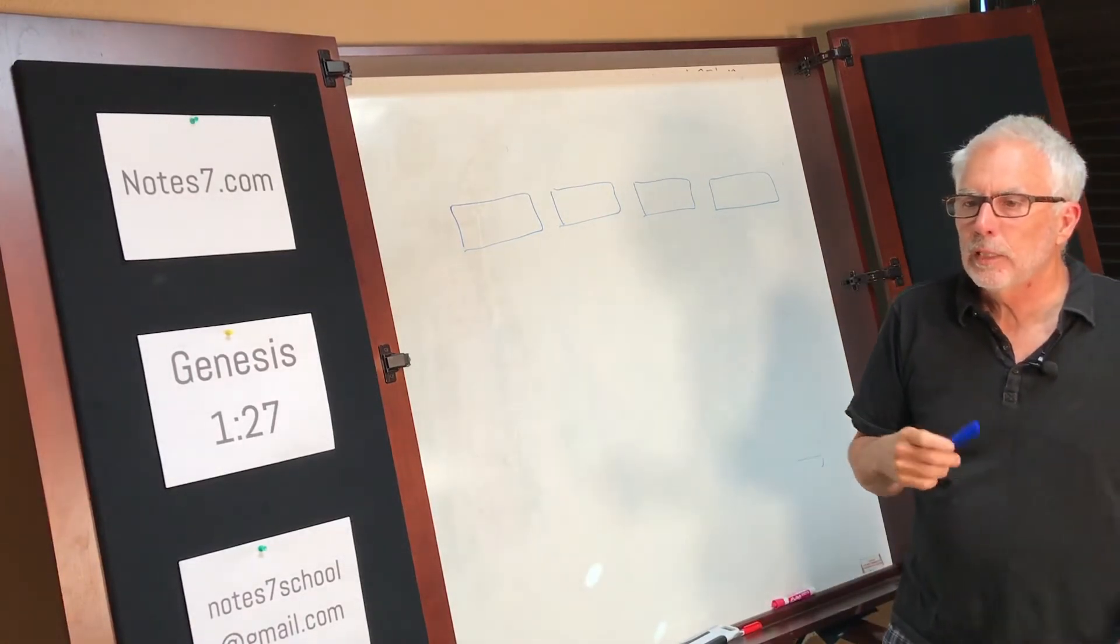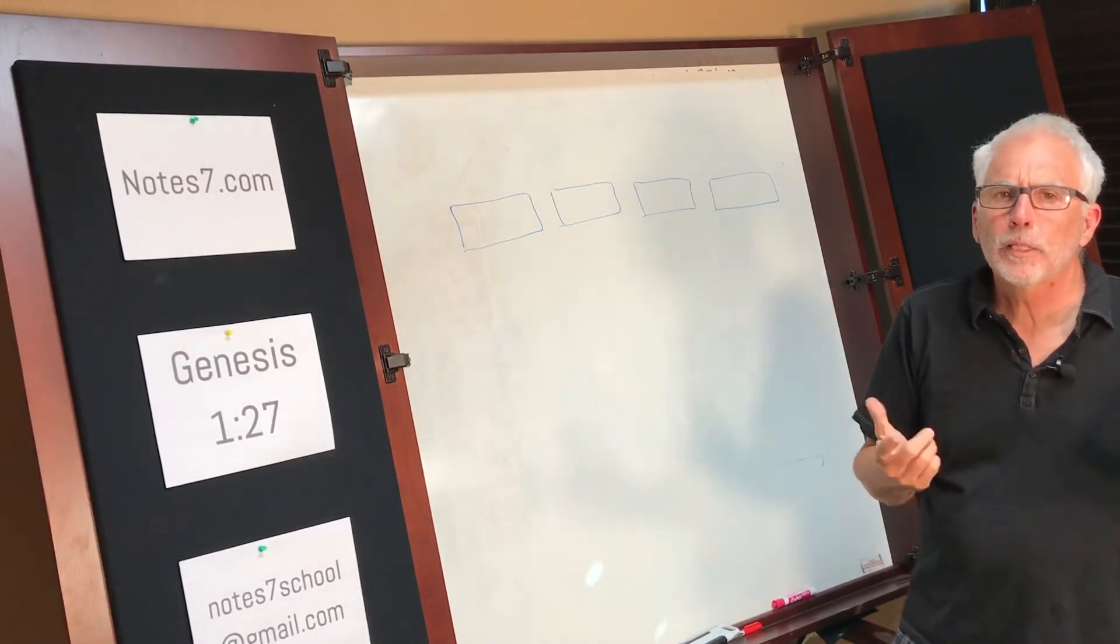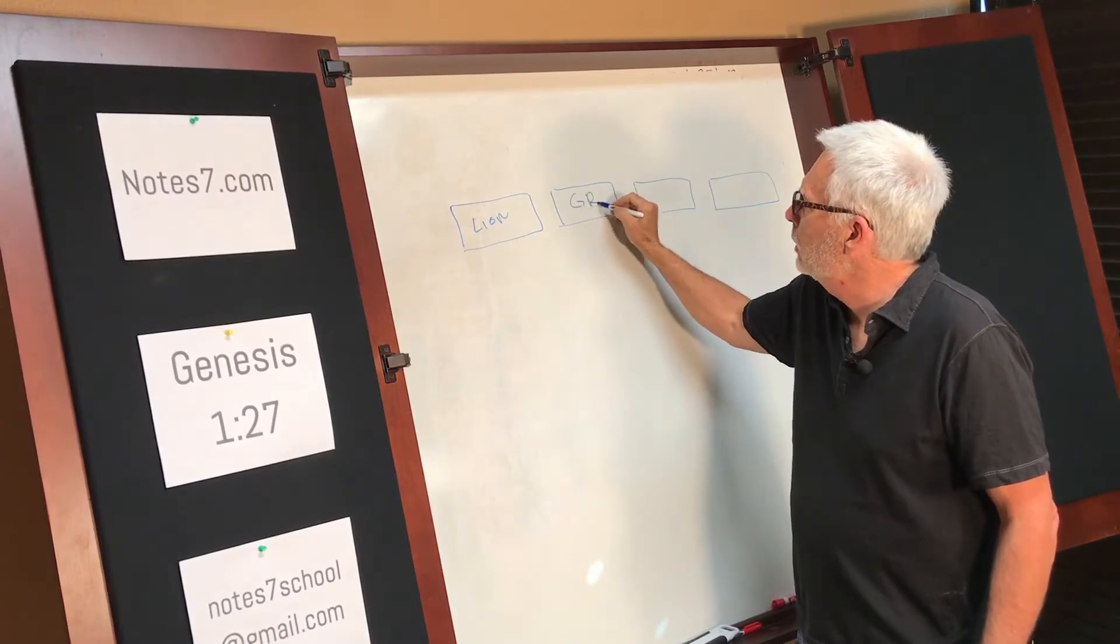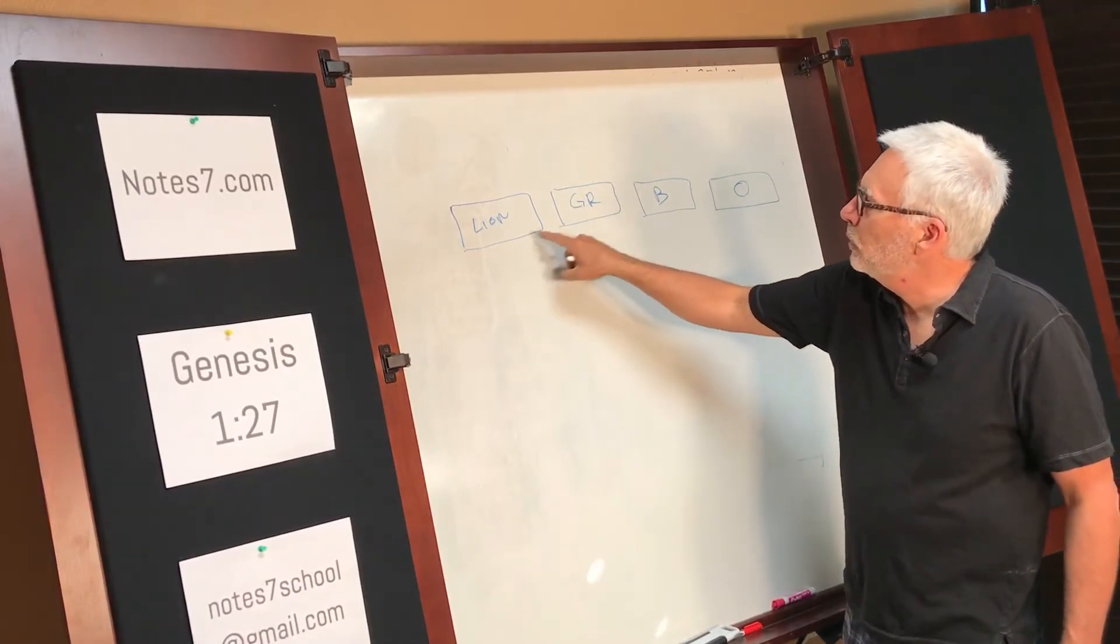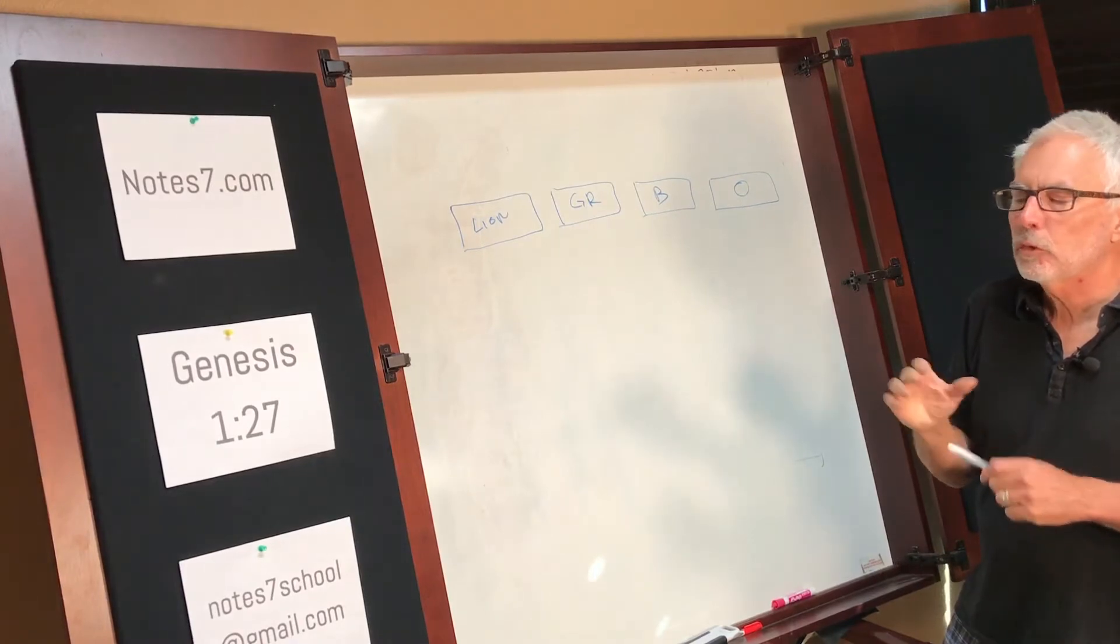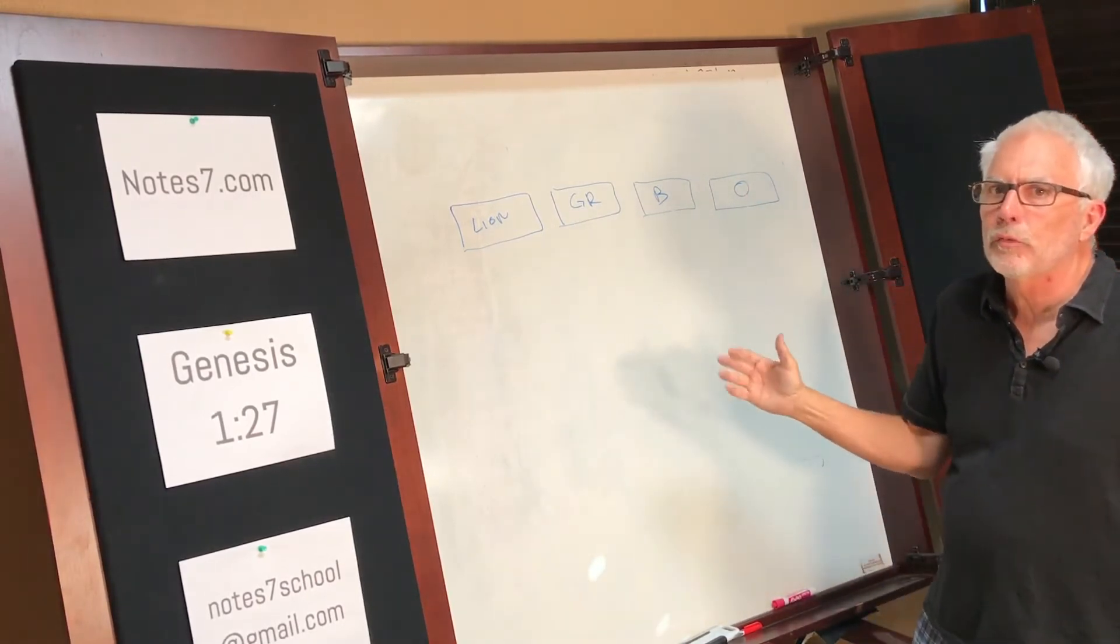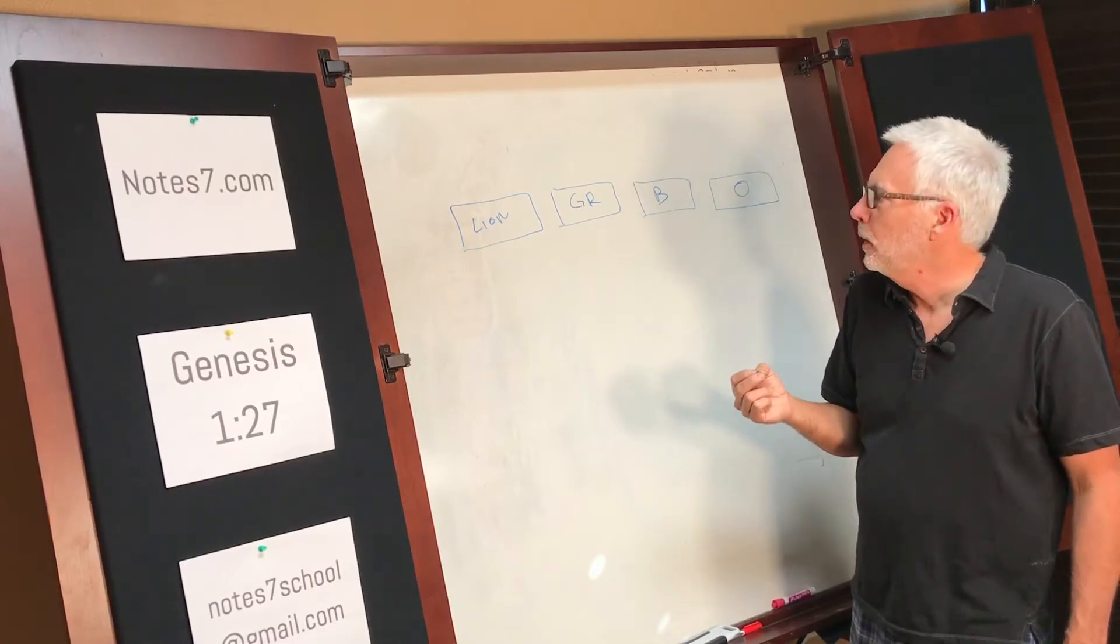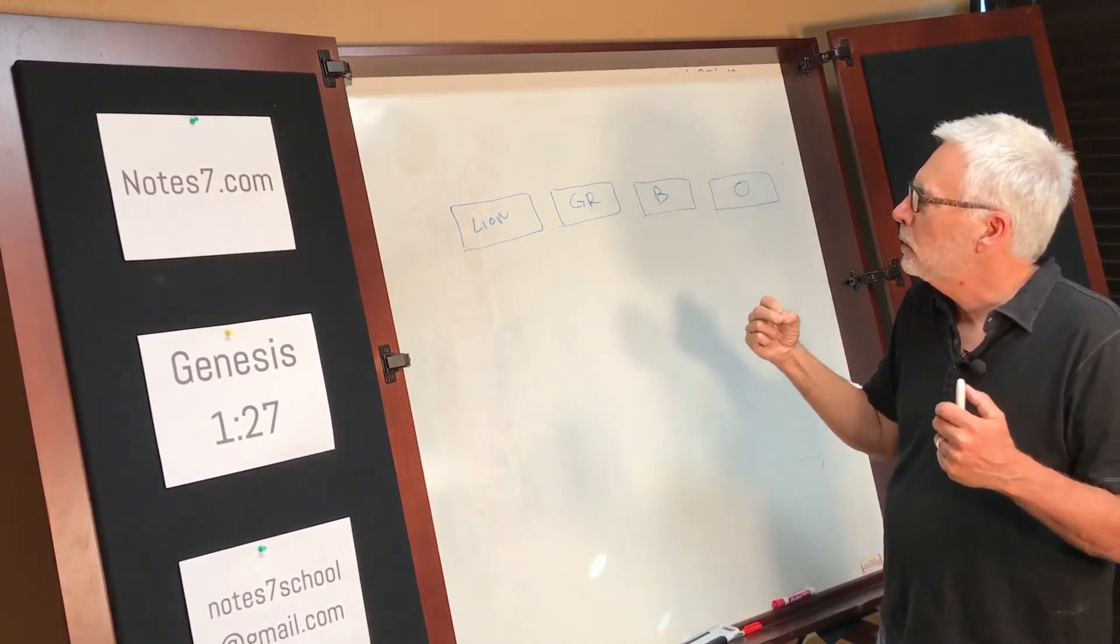I'm going to use the idea that John Trent and Gary Smalley came up with, which they use animals. I love this - all the other ones are so complicated you can never remember it. So you've got a lion, golden retriever, a beaver, and an otter. What they tried to do is pick the quintessential animal that fits this category. Like all people, we have our strengths and our weaknesses. I'm not trying to put all human beings in these categories because we're all unique, all different. But when you're talking to someone you're going to want to know what they are based on these attributes.